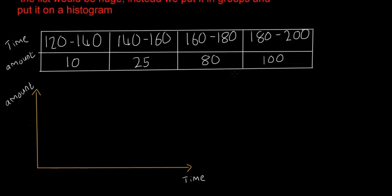First thing you do is label the y-axis: 20, 40, 60, 80, 100. And then you label the x-axis as well: 120, 140, 160, 180, and 200.